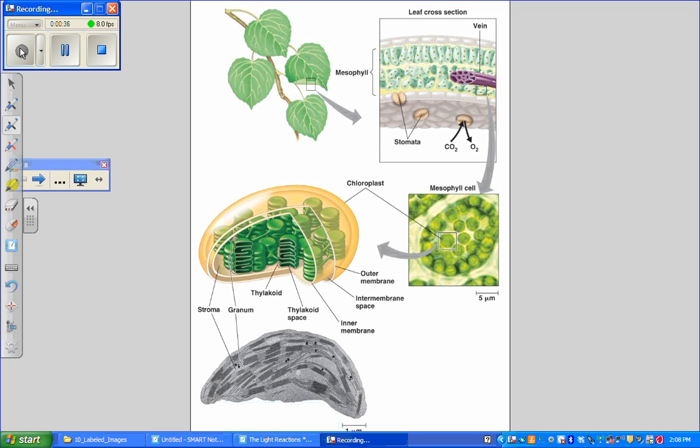We're looking at figure 10.3 from our textbook and we want to locate the stroma, the thylakoid, the thylakoid space, the inner membrane, and the outer membrane of the chloroplast.